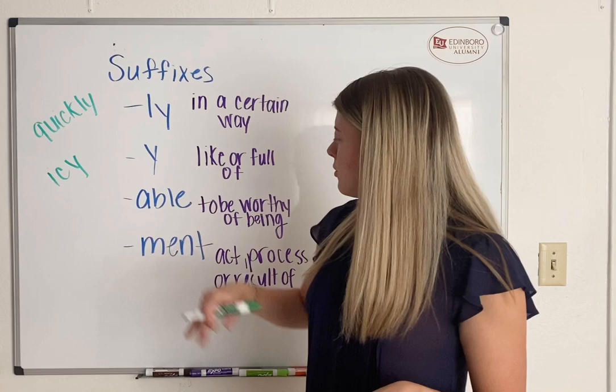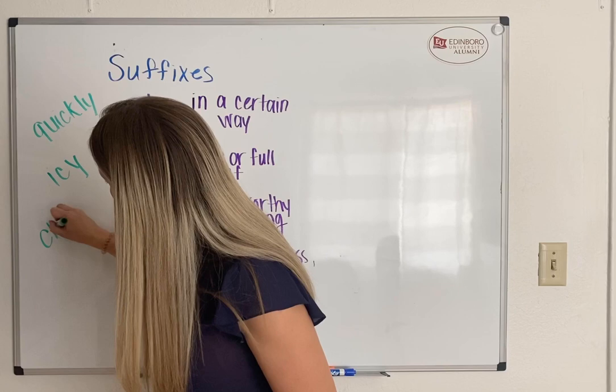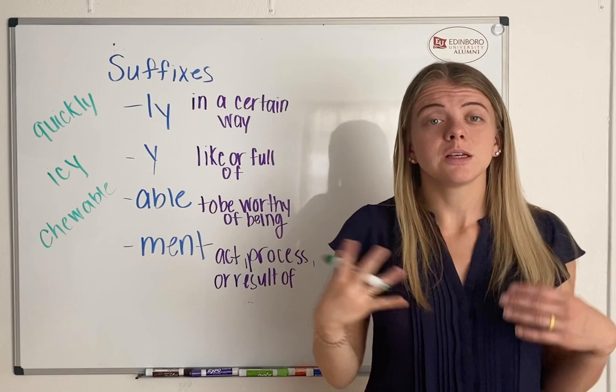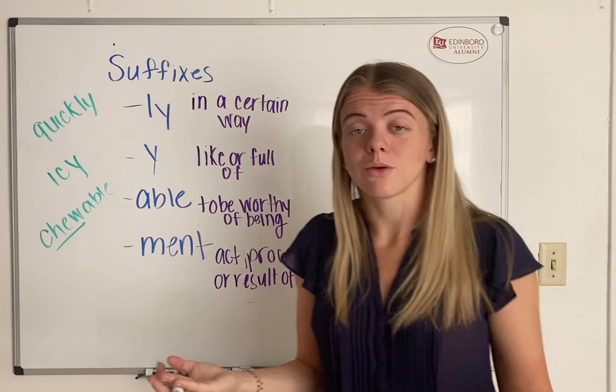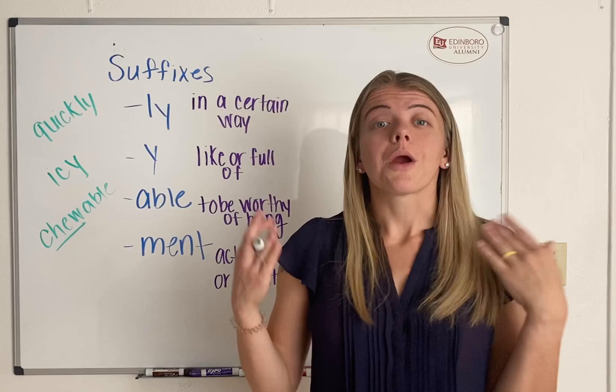Able means 'to be worthy of being.' My example word for able is 'chewable.' If something's chewable, that means it's able to be chewed — you're allowed to chew it. Think about a vitamin that you take, a chewable vitamin. You don't have to swallow it; you're able to chew it.